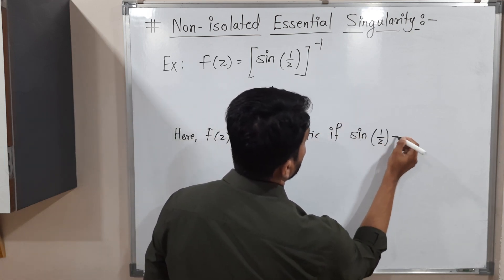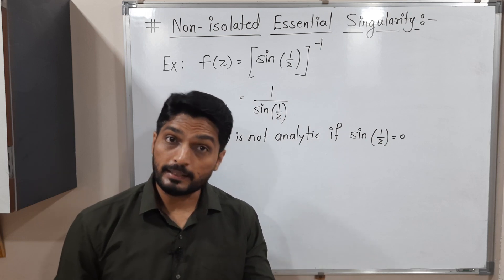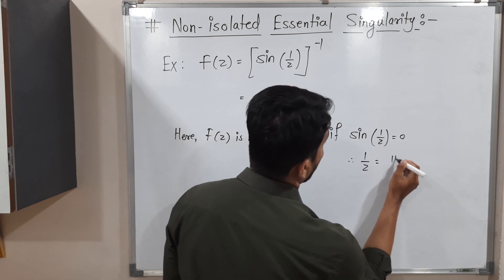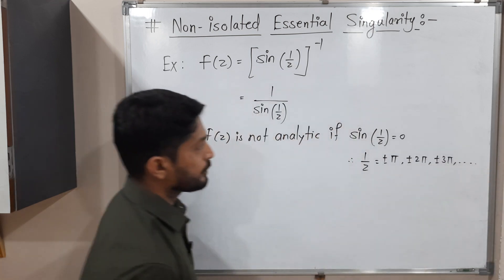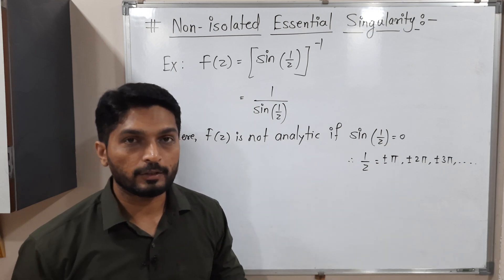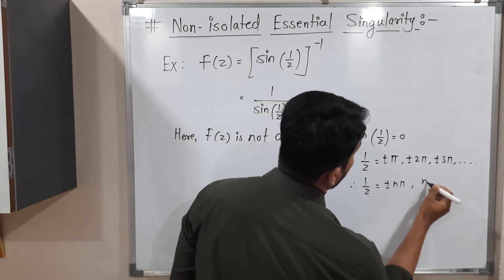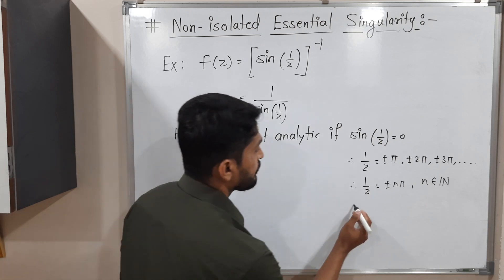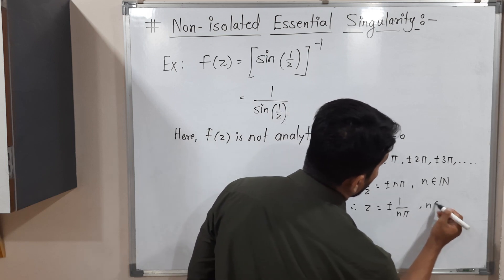When does sine equal zero? Sine(0) = 0, sine(π) = 0, sine(2π) = 0, sine(3π) = 0. It means 1/z will be ±π, ±2π, ±3π, and so on. These are the possible values of 1/z. We cannot take 0 here since 1/z = ±nπ, where n is a natural number. Since we are interested in the value of z, we take the reciprocal of both sides: z = ±1/(nπ), where n belongs to the set of natural numbers.